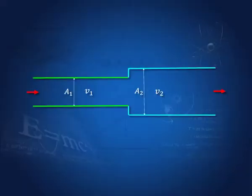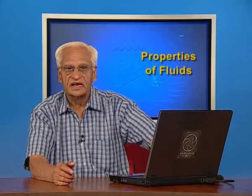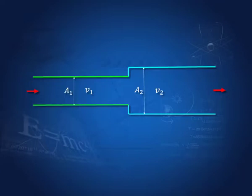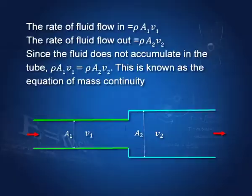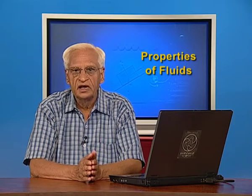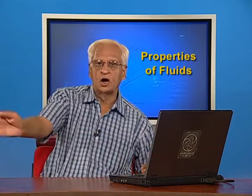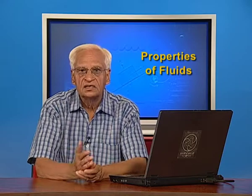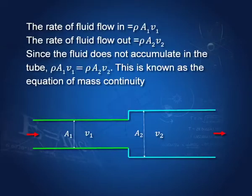Now suppose we have a variable cross section A1 here and cross section A2 here. The fluid entering per second is rho A1 v1 and going out is rho A2 v2, and rho is common. Therefore A1 v1 equals A2 v2. Why is it so? Because on the way, there is no point where the fluid accumulates. Whatever enters goes out. Therefore, this is known as the equation of continuity of mass.